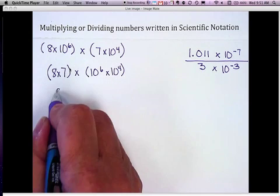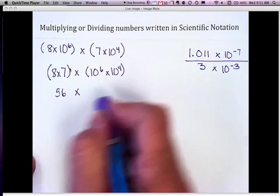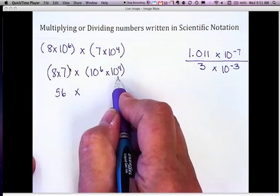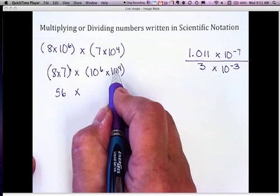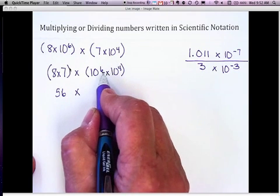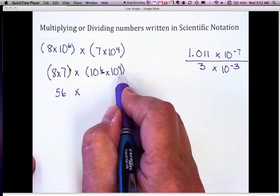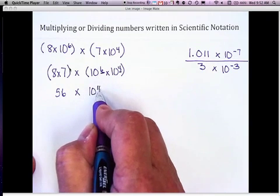8 times 7 is 56, multiplied by 10 to the 6 times 10 to the 4th. Using my product of powers property, I'm going to add the 6 and the 4. So I would now have 10 to the 10th power.